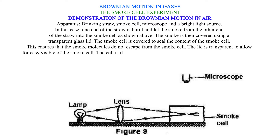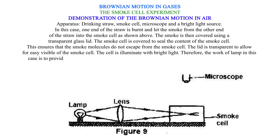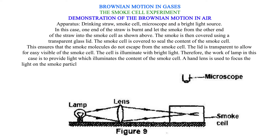The cell is illuminated with bright light. The work of the lamp in this case is to provide light which illuminates the content of the smoke cell. A hand lens is used to focus the light on the smoke particles in the smoke cell.